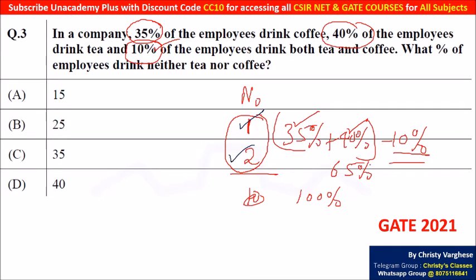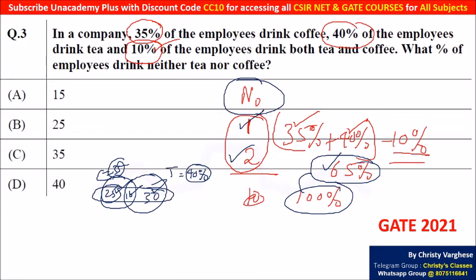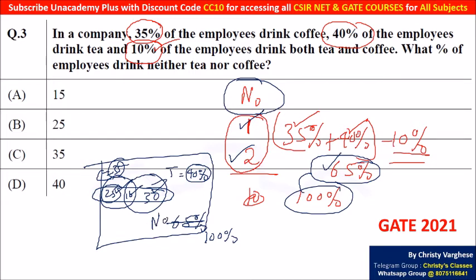From 100%, if you subtract that 65%, you get the no-drink people, because that is the only remaining group. If you draw it in a Venn diagram, coffee drinking is 35%, tea drinking is 40%, and both are 10%. So the coffee-only group is 35 minus 10 equals 25%, and tea-only is 40 minus 10 equals 30%. Adding 25, 30, and 10 gives 65%. From 100%, removing 65% gives you 35% — the no-drink people.